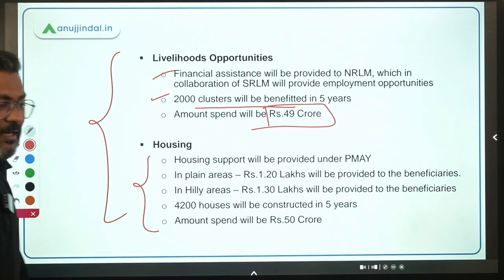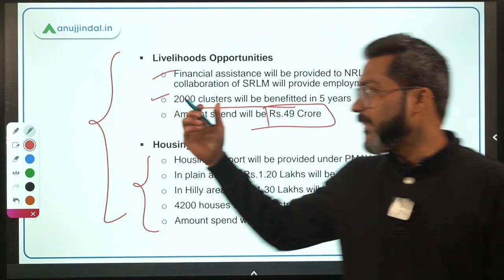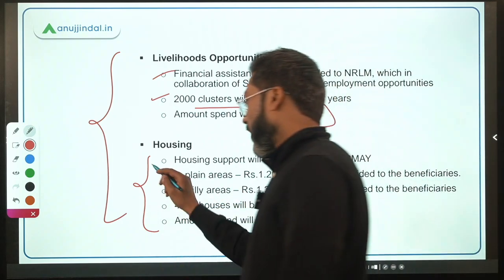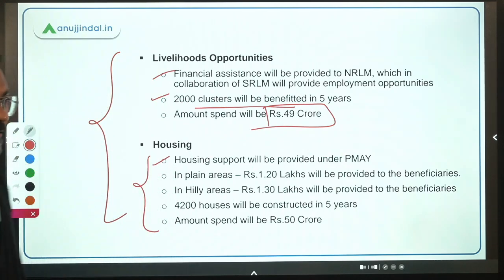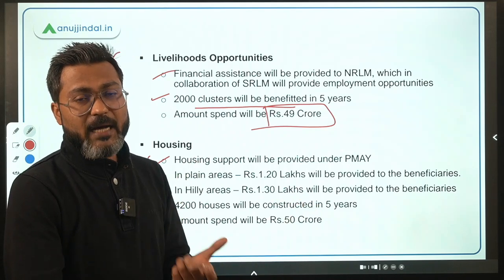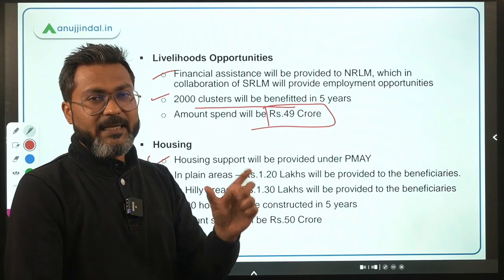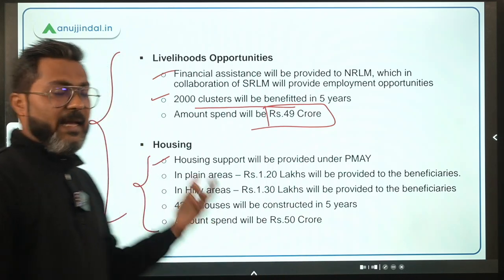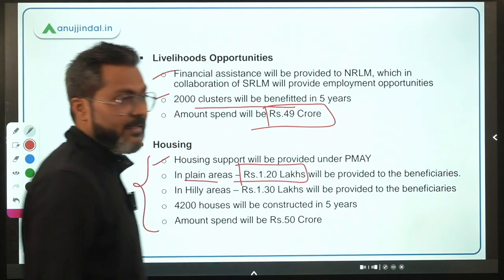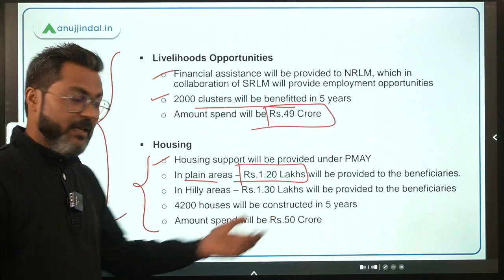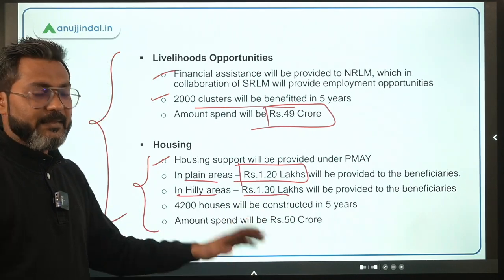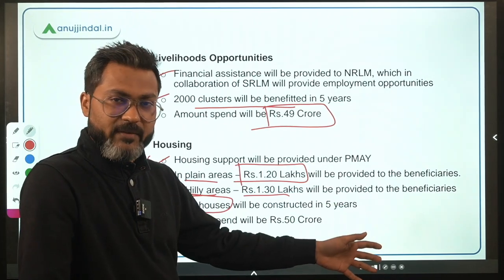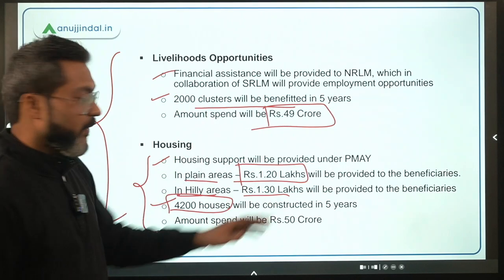Component four is housing, provided under Pradhan Mantri Awas Yojana. Beneficiaries in plain areas will receive Rs. 1.20 lakh, and in hilly areas Rs. 1.30 lakh, for construction of their own house. A total of 4,200 houses will be constructed over 5 years, with Rs. 50 crores spent on this component.